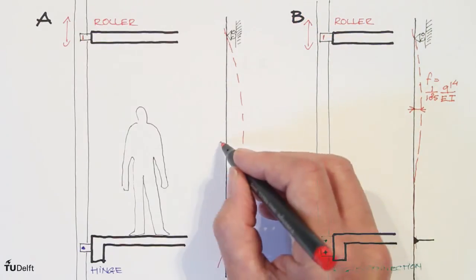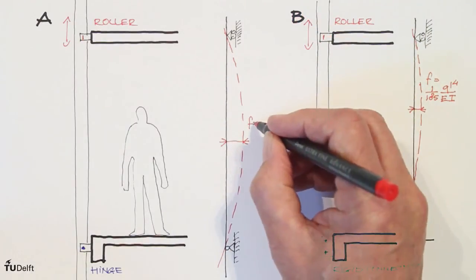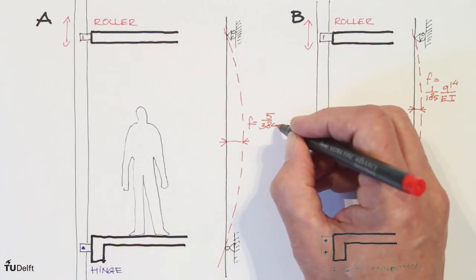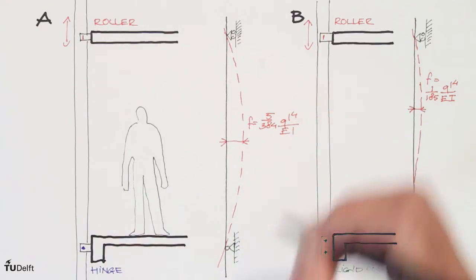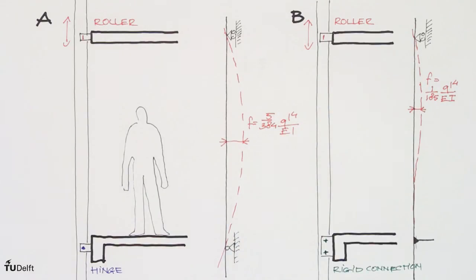On the other hand, anchor B must be strong enough to transfer the bending to the main structure, and the main structure must be capable to withstand this bending moment. By choosing the right anchor, we can influence how forces and bending moments are working in the construction.